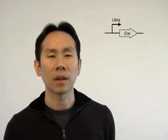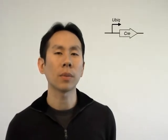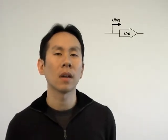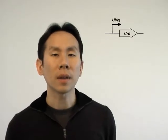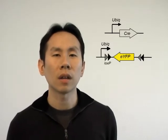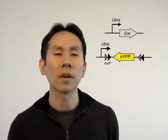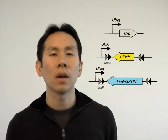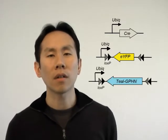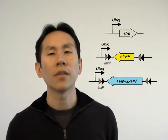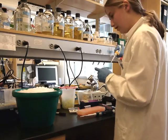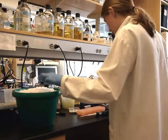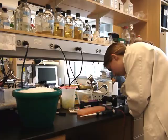For our study, we used a Cre-based expression system to sparsely label layer 2-3 pyramidal neurons in mouse visual cortex. We used a plasmid expressing yellow fluorescent protein to label dendritic arbors, and for inhibitory synapses, we generated a construct with teofluorescent protein fused to jeffrin, a postsynaptic scaffolding protein found exclusively at GABAergic and glycynergic synapses.